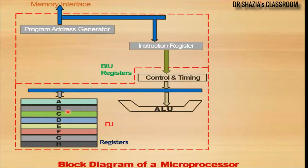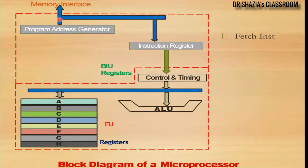Looking at the CPU in more detail, the Bus Interface Unit contains a program address generator, whose function is to generate the address for fetching the instruction. Once this address is given to the memory, the instruction is fetched from that memory location. The fetched instruction comes back to the BIU via the data bus and is stored in the instruction register within the BIU. After the instruction is fetched, it needs to be decoded, and that decoding happens within the Execution Unit.